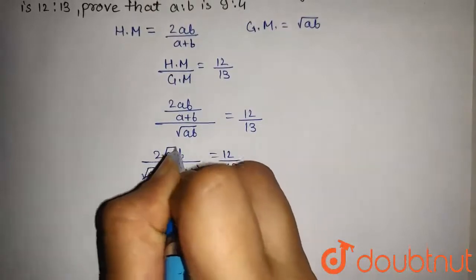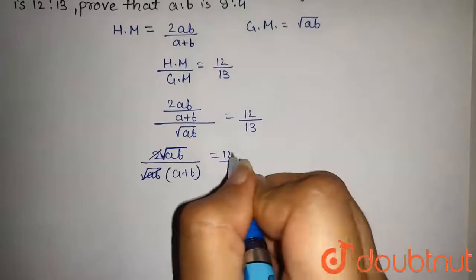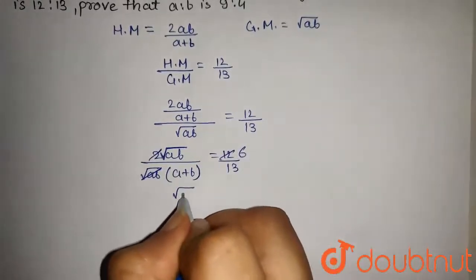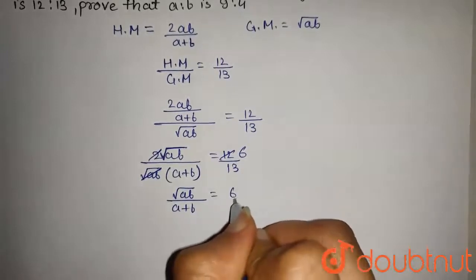This will get cancelled and here it will be root. We have this 2 and 12 will be cancelled out. So we get under root AB upon A plus B is equal to 6 by 13.